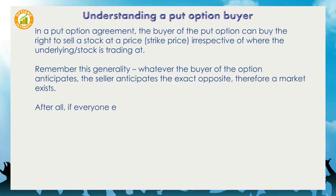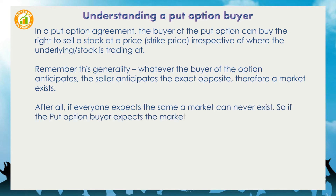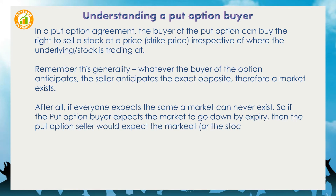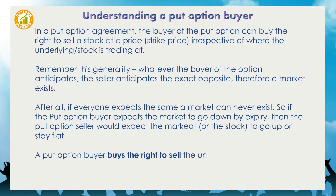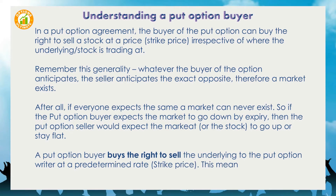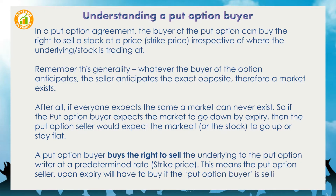So if the put option buyer expects the market to go down by expiry, then the put option seller would expect the market or the stock to go up or stay flat. A put option buyer buys the right to sell the underlying to the put option writer at a predetermined rate — the strike price. This means the put option seller, upon expiry, will have to buy the underlying if the put option buyer is selling to him.